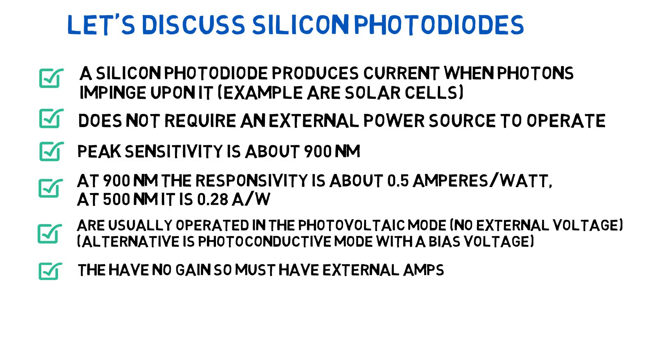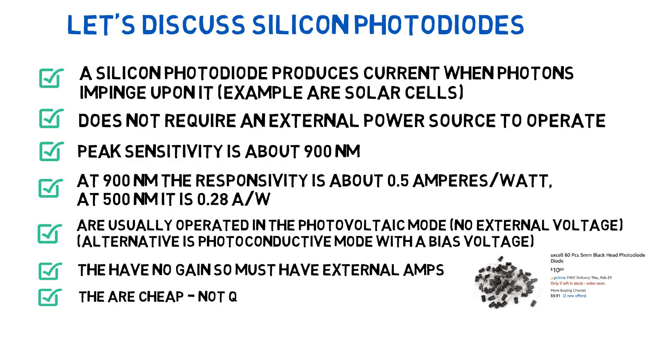Silicon photodiodes have no gain, so they must have external amplifiers. They're very cheap — not quite a dime a dozen, but almost. Next: avalanche photodiodes.